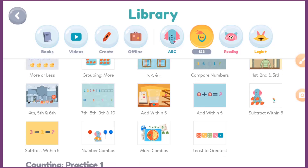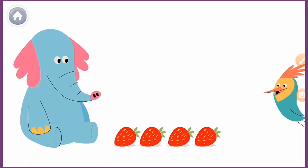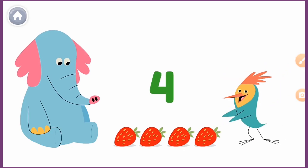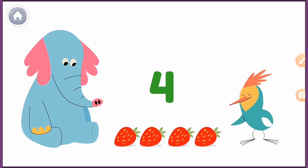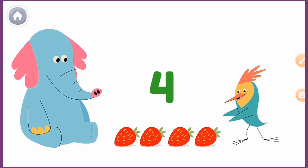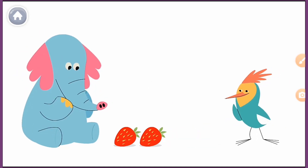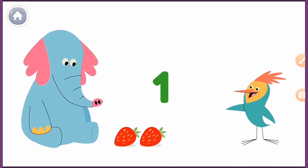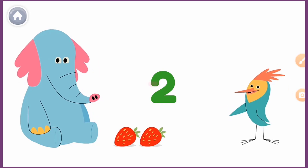Now I am selecting subtract within five. The app narrates: 'Allo has four delicious strawberries — one, two, three, four. But then I take two of Allo's strawberries. How many strawberries does he have left? One, two. Allo has two strawberries left.'